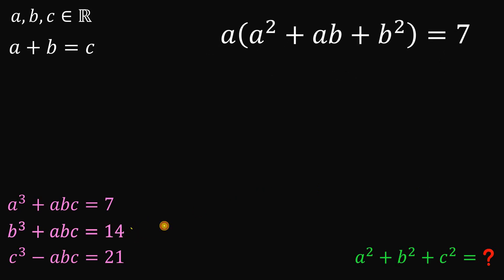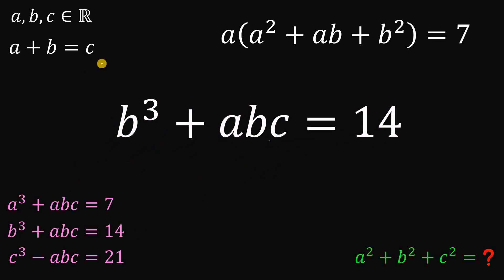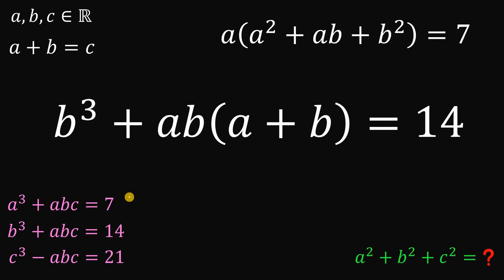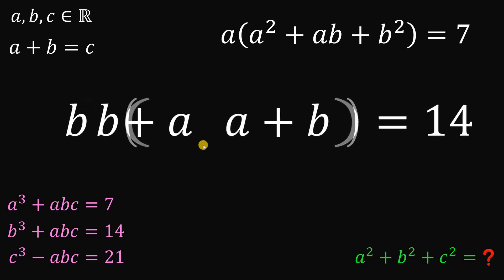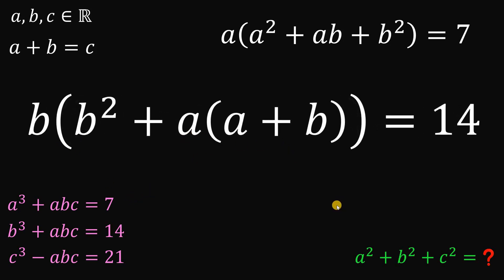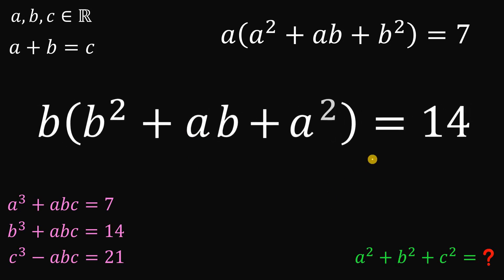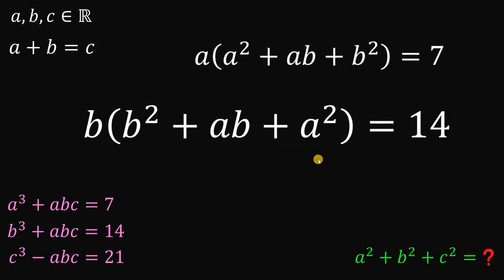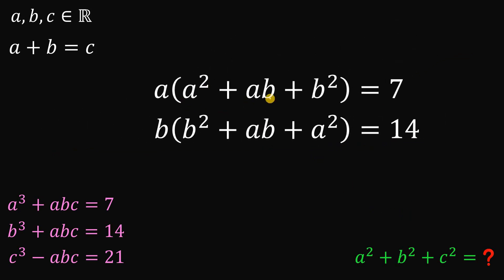Now let's use the second equation: b cubed plus abc equals 14. Again, we replace c with a plus b and do the same thing — factor out b, then distribute a to a plus b. Our second result is b multiplied by b squared plus ab plus a squared equals 14. Notice we have a common term of a squared plus ab plus b squared in both equations.